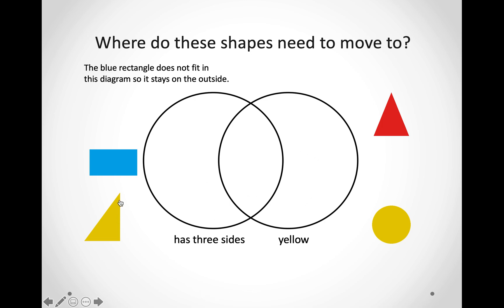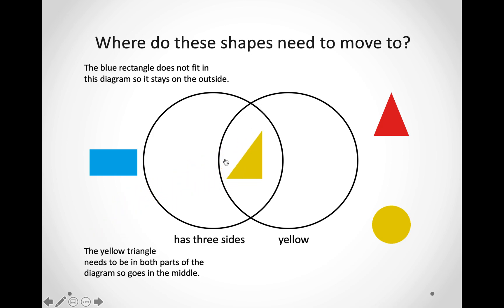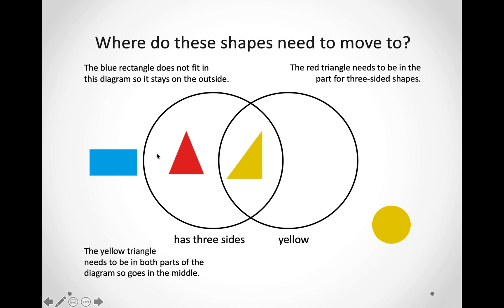Let us look at this one. How many sides does it have? One, two, three — it has three sides. And is it yellow? Yes, it is. So, we are going to put it in the middle where the circles go over each other, because it is yellow and it has three sides. Let us look at this triangle over here. Is it yellow? No. But does it have three sides? One, two, three — yes, it does. So, we are going to put it in the circle that says has three sides.